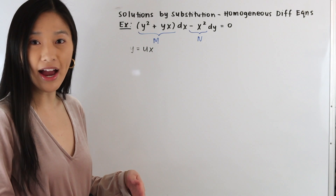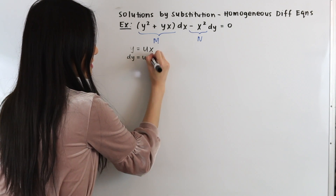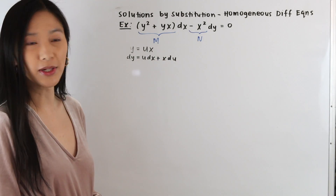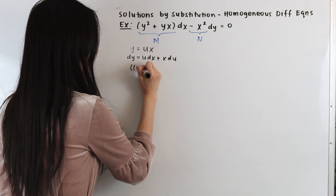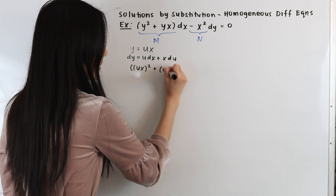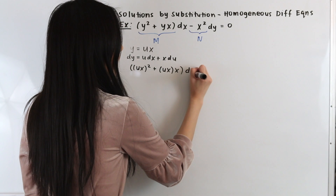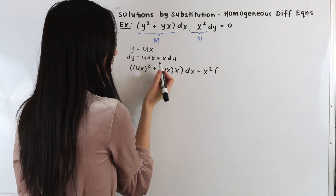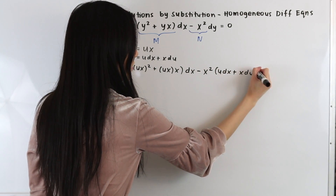Because we are making a substitution for y, we also need to make a substitution for dy. By the product rule, dy equals u dx plus x du. Now let's plug this into our differential equation. We have y squared — substituting ux for y gives (ux) squared — plus ux times x, all multiplied by dx, minus x squared times dy, where dy equals u dx plus x du, all equal to zero.